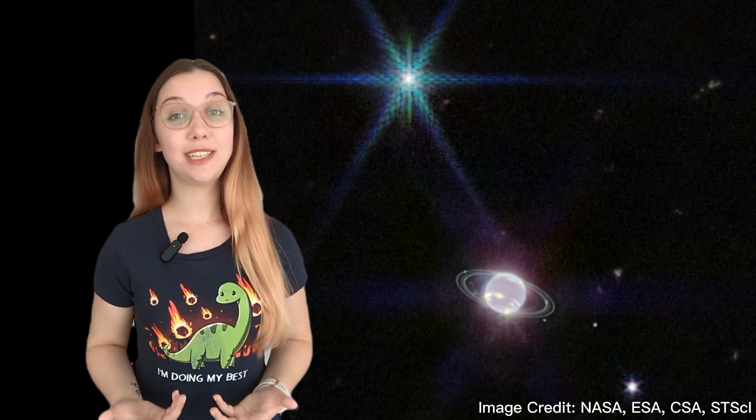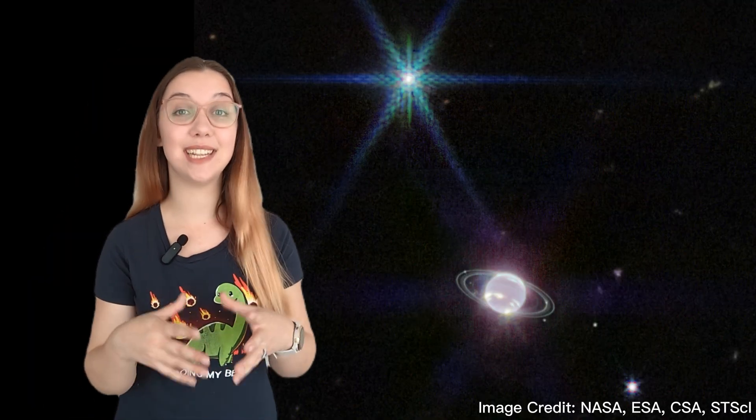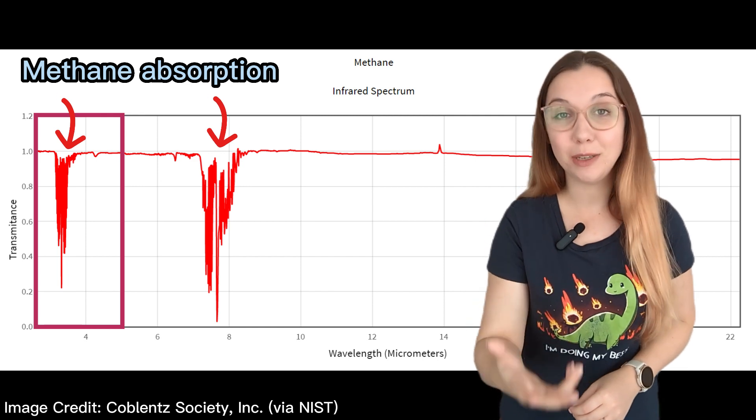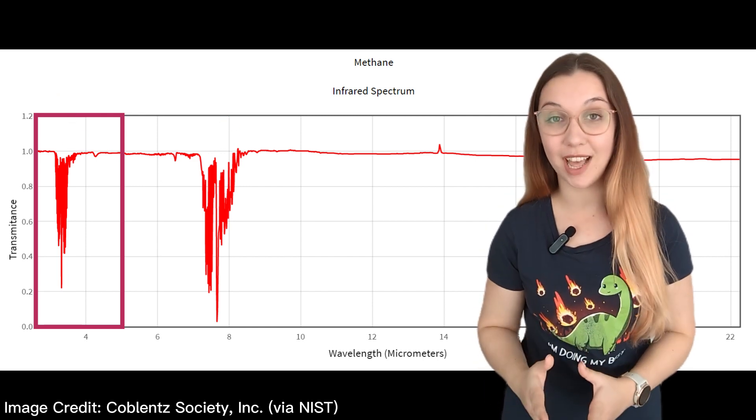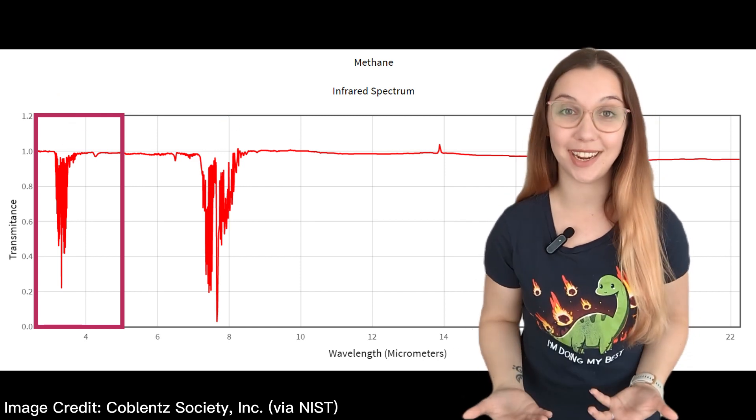Neptune, however, appears relatively dark because of the methane in its atmosphere, which is also responsible for its characteristic blue color in visible light. This is because methane primarily absorbs red and infrared light, leaving behind mostly blue light.